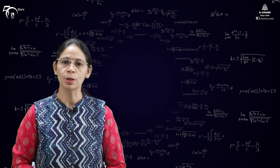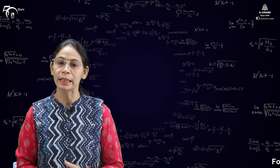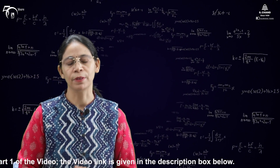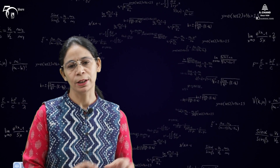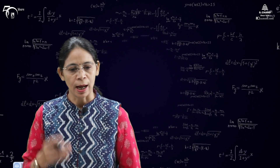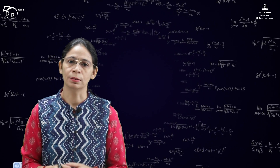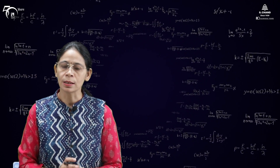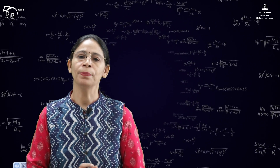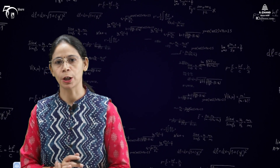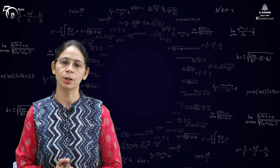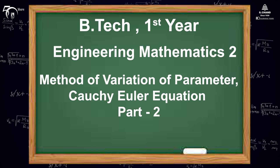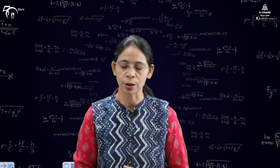We will solve one example to show how to write down the particular integral of a linear differential equation of second order. We continue with the same example from the previous video, where we learnt how to write down the particular integral. There are two restrictions: this method finds only the particular integral, not the complementary function, and the complementary function must already be known.